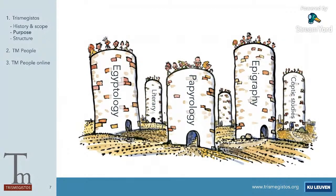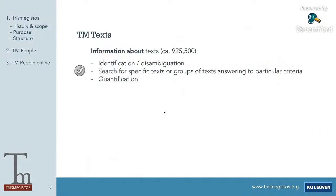One of the most important purposes of Trismegistos is to overcome disciplinary fragmentation. We're all trained in a specific area, each discipline has its own standards and customs, and it's often difficult to navigate other disciplines. Trismegistos wants to make it easier to overcome these boundaries. The core database is the text database — the database of sources. Since everything starts from our sources, this is the basis of everything, and currently we have a little over 900,000 texts in there.